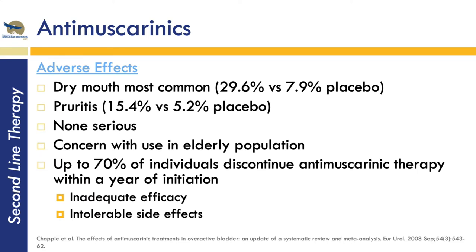When looking at adverse effects, the profile is quite large. The most common side effect is dry mouth — almost 30% of patients complained of this, moderate to severe, versus just 8% in the placebo groups. The second most common was constipation, about 15% versus 5% in placebo, but none were serious. There is significant literature on concern with use in the elderly, as anti-cholinergics could contribute to delirium and falls. About 70% of individuals actually discontinued anti-muscarinic therapy within a year of initiation.